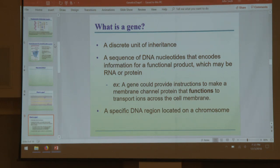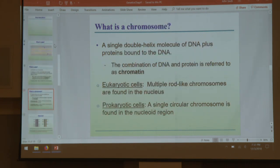Genes are located on — or in — a chromosome, which is DNA. A chromosome is a double helix molecule of DNA plus the proteins associated with it, which we cover later. That structure, the DNA and protein complex, is referred to as chromatin.